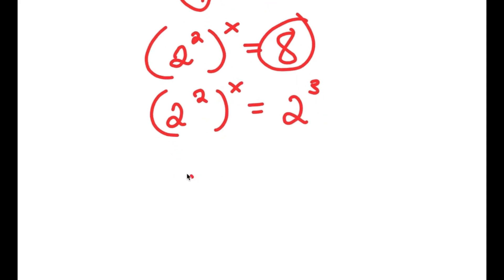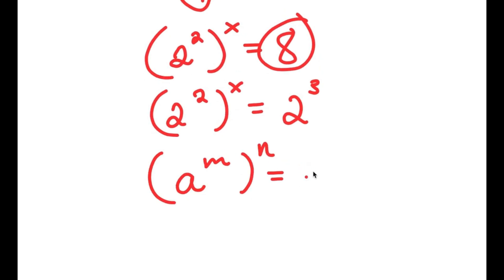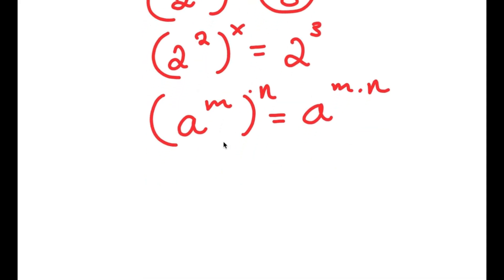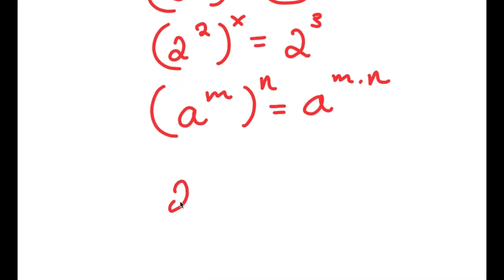Using the property that a to the power of m to the power of n equals a to the power of m times n, I get 2 to the power of 2x on the left side. So 2 to the power of 2x is equal to 2 to the power of 3.